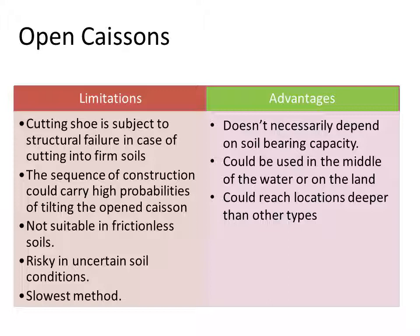The basic limitation of open caissons is that the cutting shoe is subject to structural failure when cutting into firm soils. The sequence of construction carries high probabilities of tilting during the addition of sections above. Since it mainly depends on skin friction, it is not suitable for frictionless soils, and it is risky in cases of uncertain soil conditions and it is slow. However, the main advantage is that it does not depend on soil bearing capacity at all, can be used in water or on land, and can reach depths greater than other types.